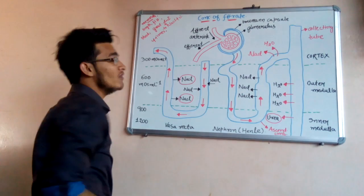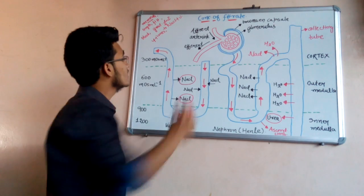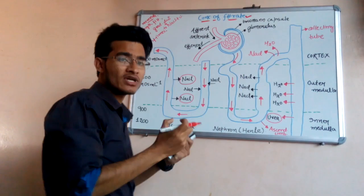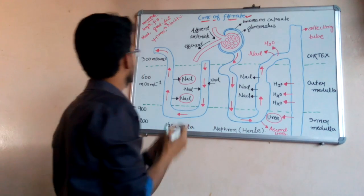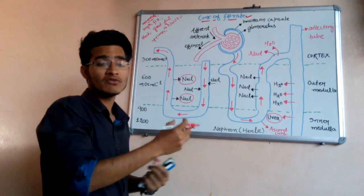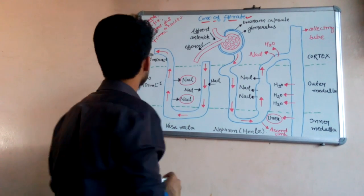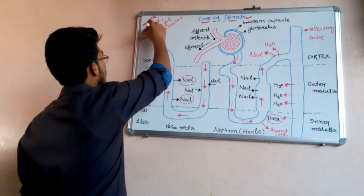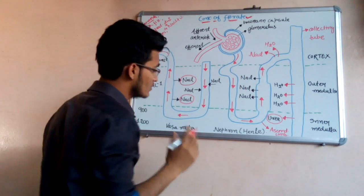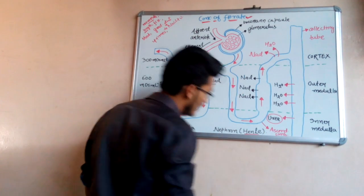All mammals have a capability or tendency to concentrate their filtrate — to make their filtrate more concentrated by the process of dehydration, that is the removal of water. When we remove some amount of water from a particular substance, the concentration of that substance increases. The concentration of filtrate depends on two things: the first is the length of the loop of Henle, and the second is the vasa recta.